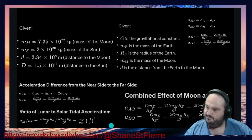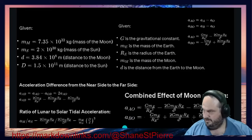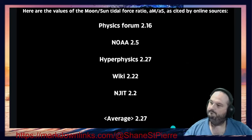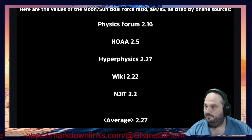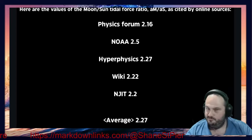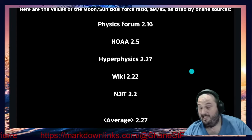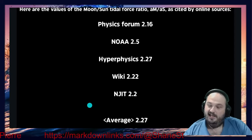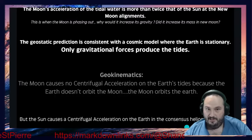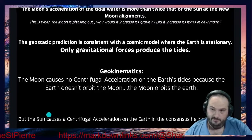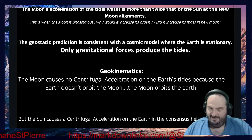There's a summary slide rounding up the variables and constants used. Cross-checking against other determined values of lunar acceleration: Physics gives 2.16, HyperPhysics gives 2.15, another source 2.27, Wikipedia 2.22, averaging around 2.27. This was a double-check to make sure the result was in the ballpark — and it absolutely was, right on point.